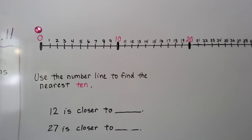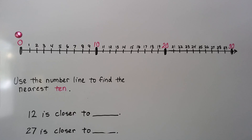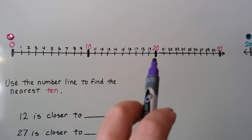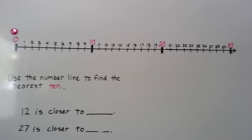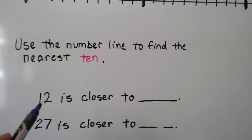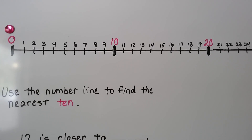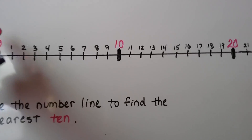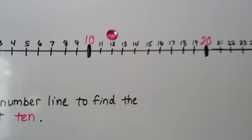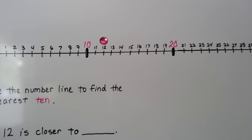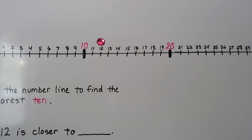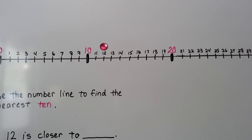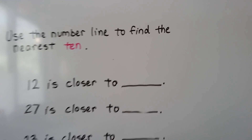I have a number line here and we can see our tens: 0, 10, 20, and 30. I'm going to use this to find the nearest 10. We need to find what 12 is closer to. So the first thing we do is find the 12 on the number line. We can move our jewel there. We look at which two tens the 12 is in between — it's in between 10 and 20 — and then we see which one it's closer to. It's closer to the 10, so 12 is closer to 10.